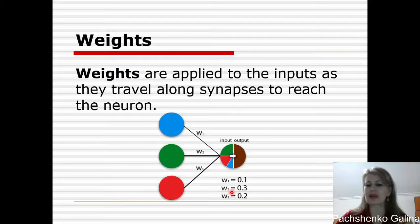So we can see here like it fires our neuron in which proportion. So weights are applied to the inputs as they travel along synapses to reach the neuron.